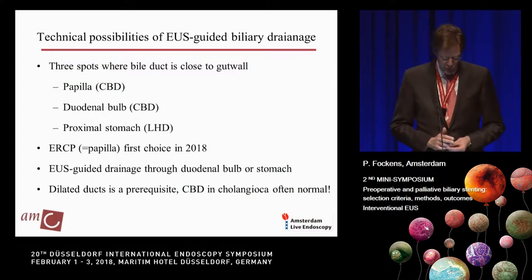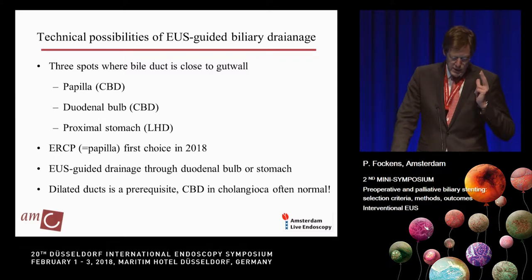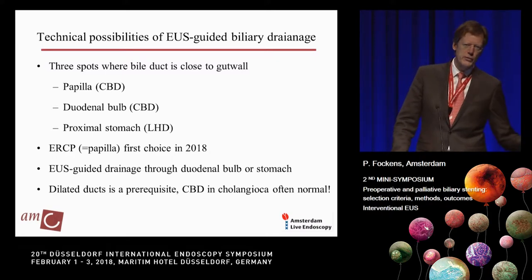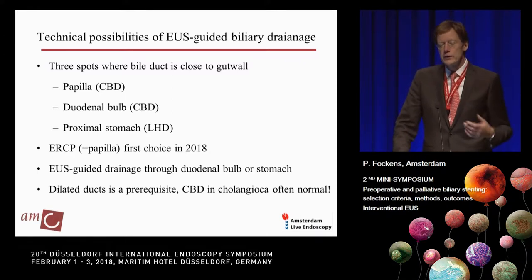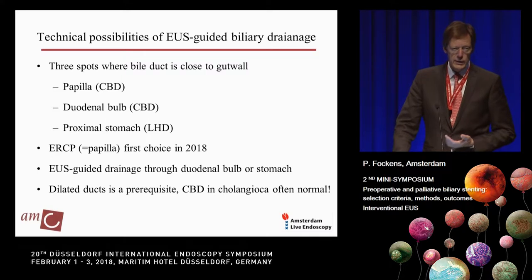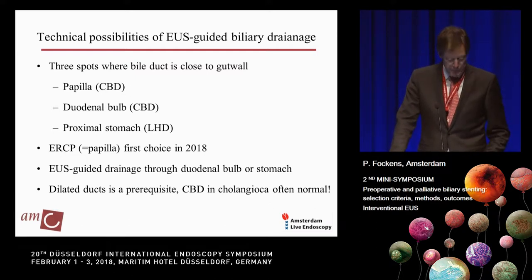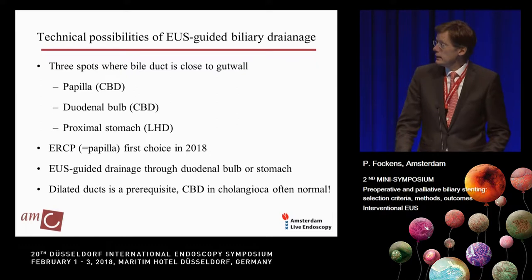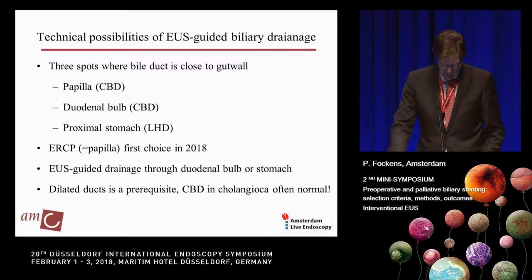What are the technical possibilities for EUS-guided biliary drainage in cholangiocarcinoma? In general, there are three places where the bile duct is very close to the gut wall — that's a prerequisite. One is the papilla, but that's for ERCP, so it doesn't make sense to try with EUS through the papilla, since the main reason we do this is to escape from pancreatitis. Then we have the duodenal bulb, where the bile duct is very close and you can puncture it quite easily. And in the proximal stomach, the left hepatic duct is accessible because the left liver lobe lies over the stomach, making it relatively easy to find and puncture the bile duct.